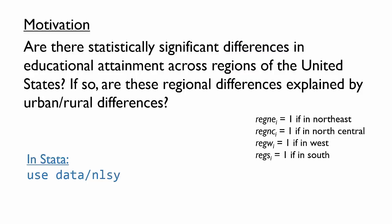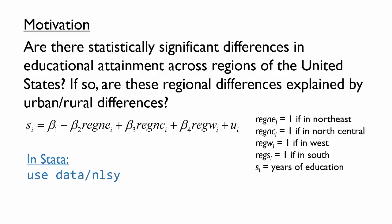There are four dummy variables describing mutually exclusive regions of the United States: North-East, North-Central, West, and South. To answer the first question, we could use the variable S for years of education or schooling as a dependent variable, and three out of the four region dummy variables as the independent variables. We need to omit one category to avoid perfect multicollinearity. The choice is not too important here, but I'll exclude the South. Here is the model and the associated Stata command. Let's take a look at the results of this model.